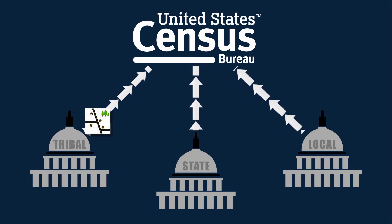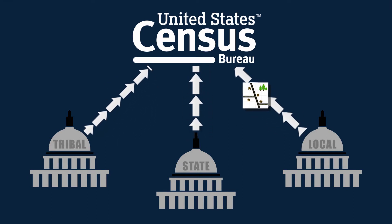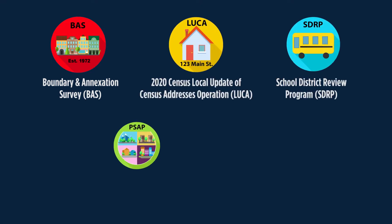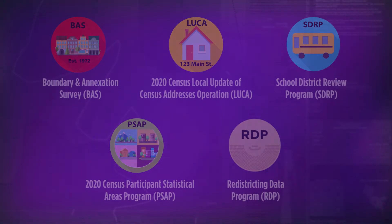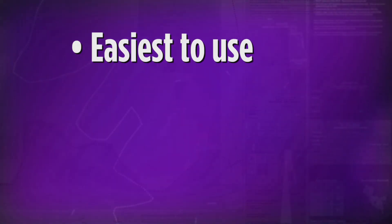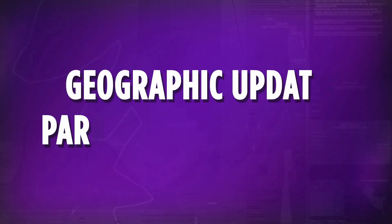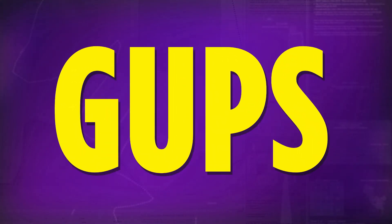Participating governments can provide updated maps for a variety of geographic areas, such as legal boundaries, addresses and roads, school districts, statistical areas, and redistricting boundaries. The easiest to use, most efficient, and most cost-effective method for participation in Census Bureau programs is use of the Geographic Update Partnership Software, or GUPS.